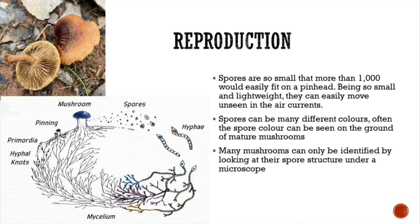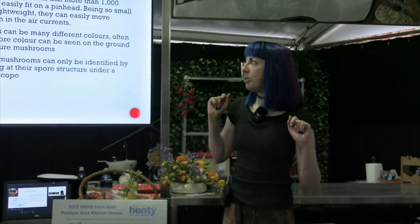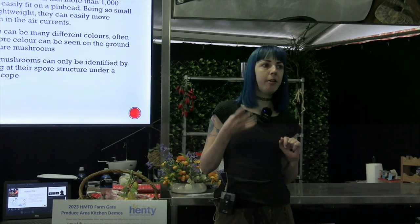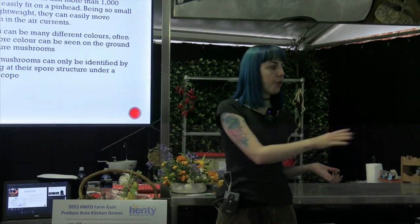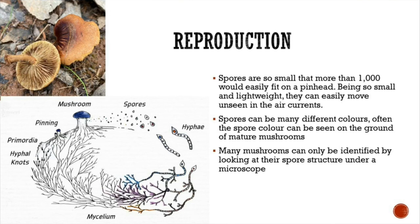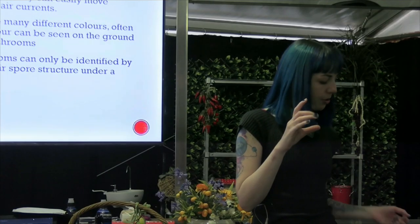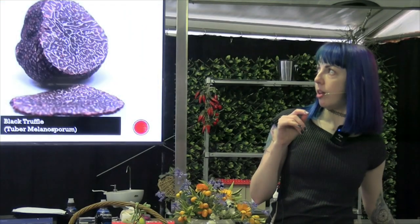Reproduction: mushrooms reproduce by spores. Spores are tiny little hyphae produced in the gills; they drift in air currents, land on something, turn into mycelium, and then produce mushrooms. They can be heaps of different colours — white, brown, black — you can see all the colours in the spore prints. Many mushrooms can only be identified by looking at their spore structure under a microscope.